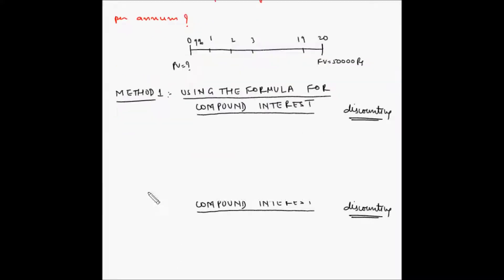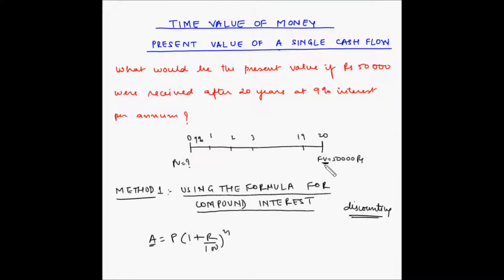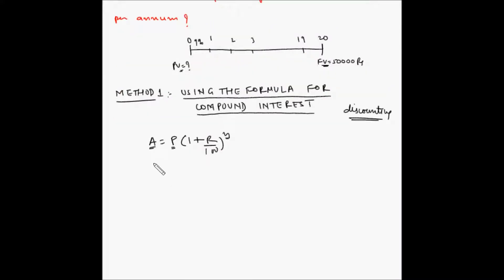The formula for compound interest is: A = P × (1 + R/100)^N, where A is the amount received at the end of the tenure, P is the principal amount invested at the beginning, R is the rate of interest per compounding period, and N is the number of compounding periods. This can also be written as: Future Value = Present Value × (1 + i)^N, where i = R/100.